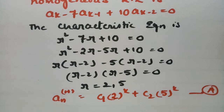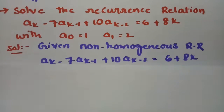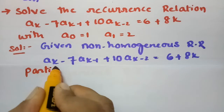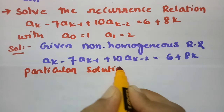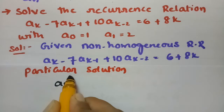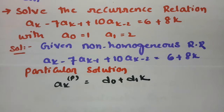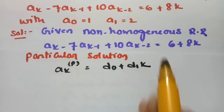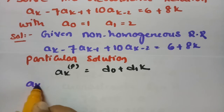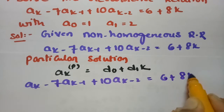Now we need the particular solution. Since the RHS is 6 + 8k (a polynomial in k), our assumption for the particular solution is An(P) = D0 + D1·k. We substitute this into the recurrence relation Ak - 7·Ak-1 + 10·Ak-2 = 6 + 8k.